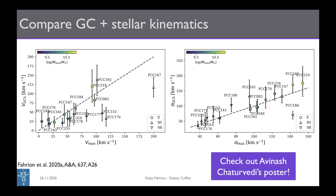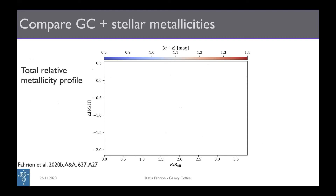If you're interested in more globular cluster velocity measurements in Fornax, I invite you to look at Avina Shatouberdi's poster, which has a great sample. Moving on, I want to briefly talk about metallicities. This plot shows the relative metallicity profile from all Fornax 3D globular clusters — for each globular cluster we subtract the metallicity of the host at each position.